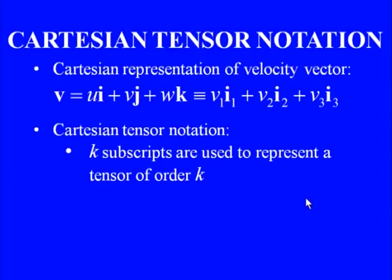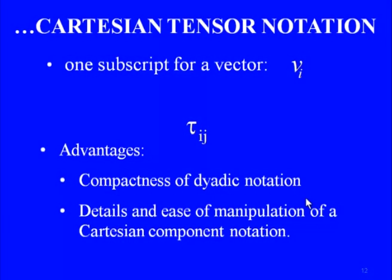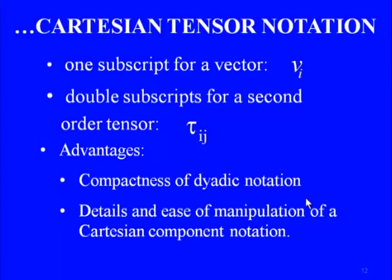For a Cartesian coordinate system, velocity vector v is represented by components u, v, w with unit vectors i, j, k in x, y, z directions. Equivalently, v1·i1 + v2·i2 + v3·i3, where i1, i2, i3 are unit vectors in x1, x2, x3 directions. In Cartesian tensor notation, the coordinate system O-xyz is written as O-x1x2x3, and we use k subscripts to represent a tensor of order k.